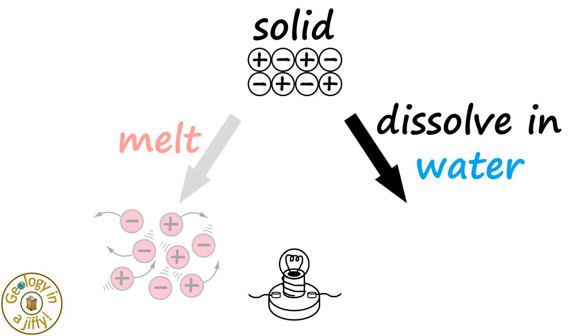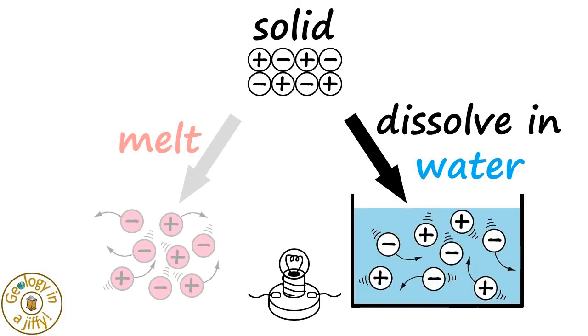The second is to dissolve the ionic solid in water, which enables the ions to move freely in the solution, with the resultant electrical current making the lamp light up.